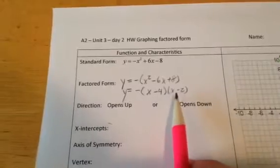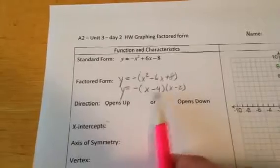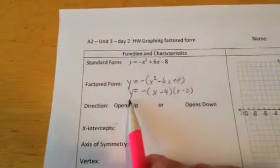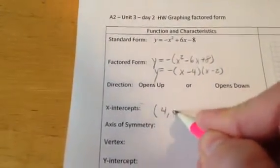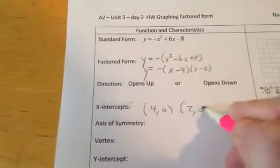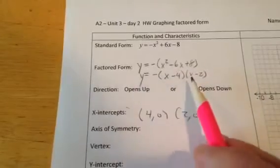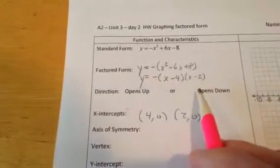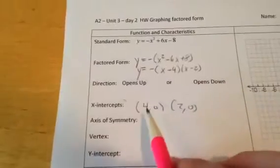When it's in factored form, we can pluck out the x-intercepts very quickly. Here I can see that x equals 4 and x equals 2 will make y equal 0, so those are my x-intercepts: 4 and 2. When x is 4 this factor is 0, and when x is 2 this factor is 0. So the x-intercepts are 4 and 2.